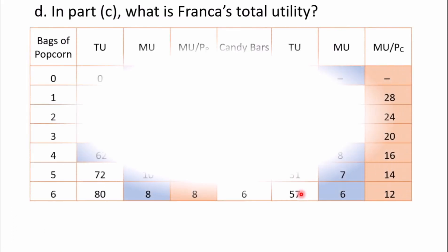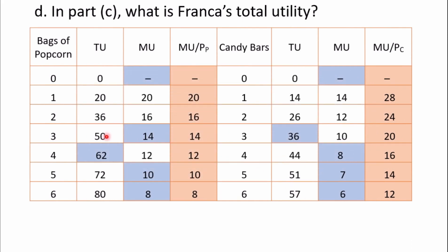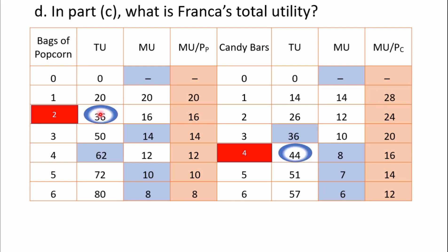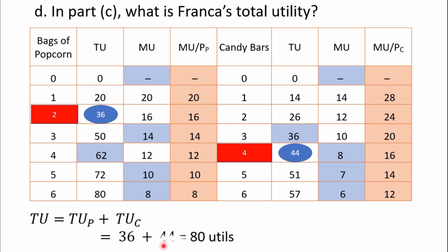The next question asks: what is Franca's total utility in part C? Since she consumes two bags of popcorn and four candy bars, we trace their respective total utilities from the table and sum them. The total utility for two bags of popcorn is 36 and for four candy bars is 44. So 36 plus 44 equals 80 utils. The unit of measurement for utility is utils.